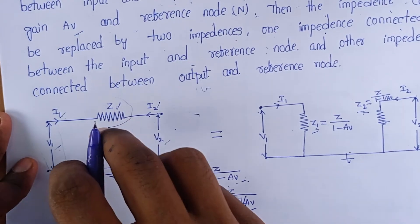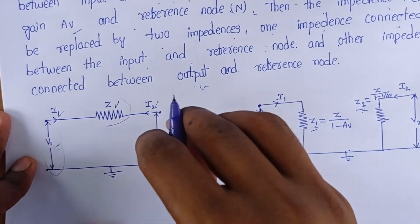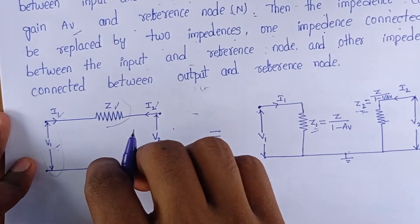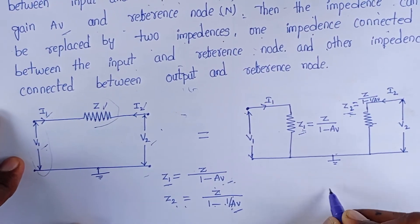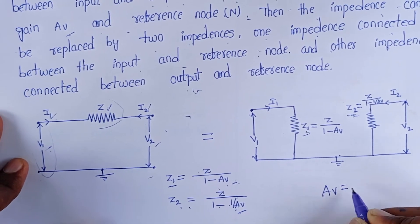Consider this is an amplifier. Amplifier means it amplifies the input signal and produces output. It must have a voltage gain. Voltage gain is Av equals output voltage by input voltage.